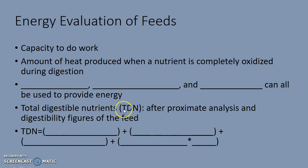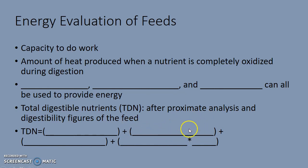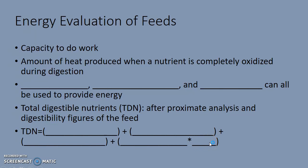Total digestible nutrients, or TDN, is determined after proximate analysis and digestibility figures of the feed. TDN for an entire feed sample is going to be: digestible crude protein, digestible crude fiber (which is the carbohydrate component), digestible nitrogen-free extract (part of the lipid component), and digestible crude fat. The digestible crude fat is multiplied by 2.25, and we'll come back to that in just a second.